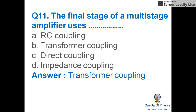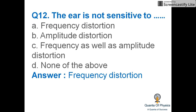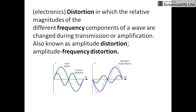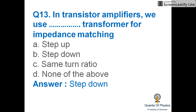The ear is not sensitive to frequency distortion. In electronics, frequency distortion is a distortion in which the relative magnitude of different frequency components of a wave are changed during transmission or amplification — also known as amplitude distortion or amplitude-frequency distortion. In transistor amplifiers, we use a step-down transformer for impedance matching.